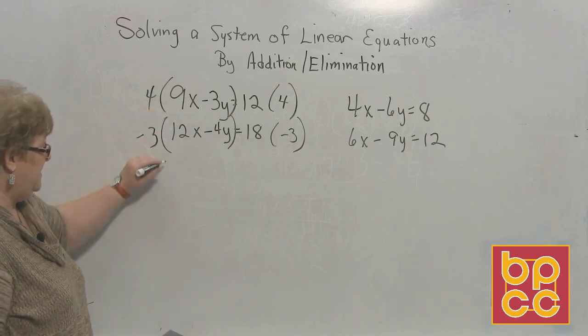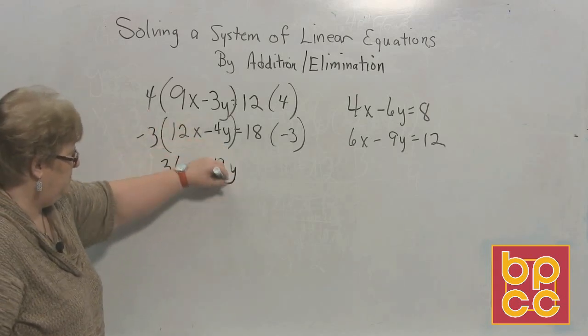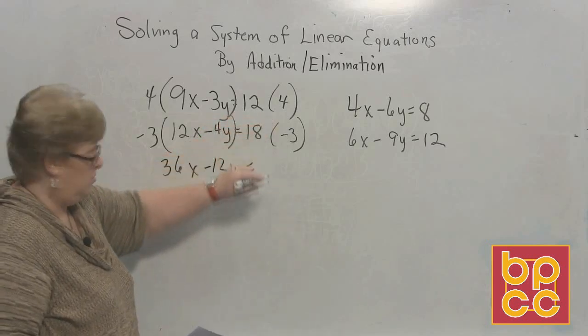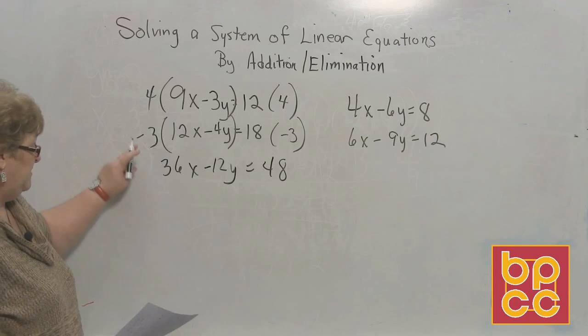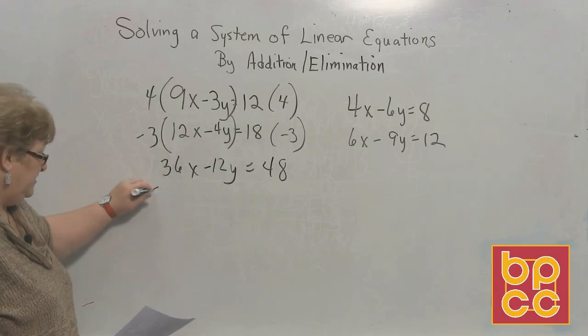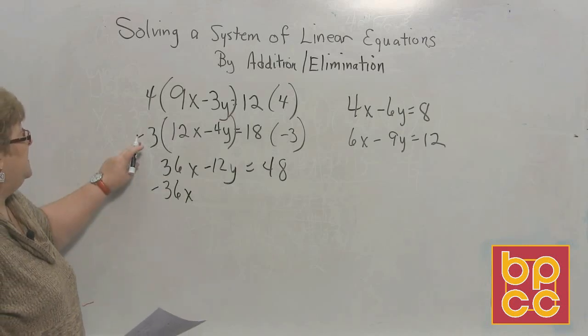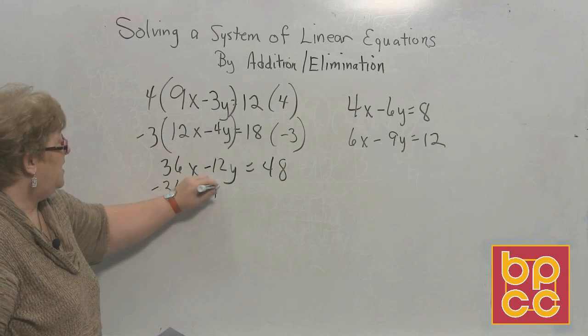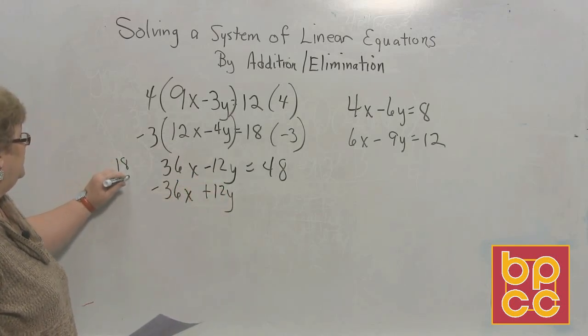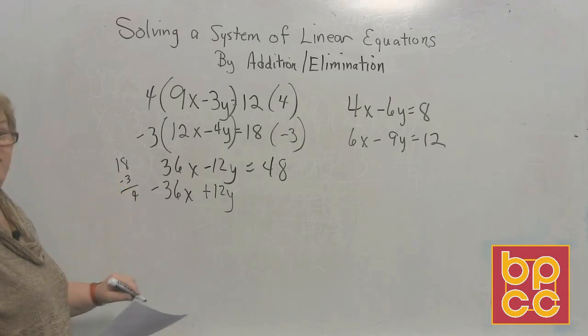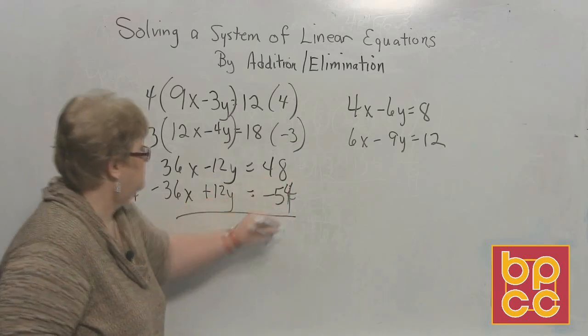Now we're ready to rewrite each one of them and hopefully something's going to clear out. I have 4 times 9x is 36x minus 12y equal 12 times 4 which is 48. That works pretty well. Now let's try this one. Negative 3 times 12 is a negative 36. That's what's supposed to be happening. That looks good.